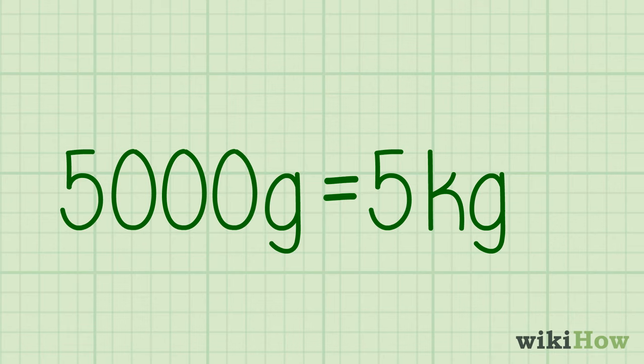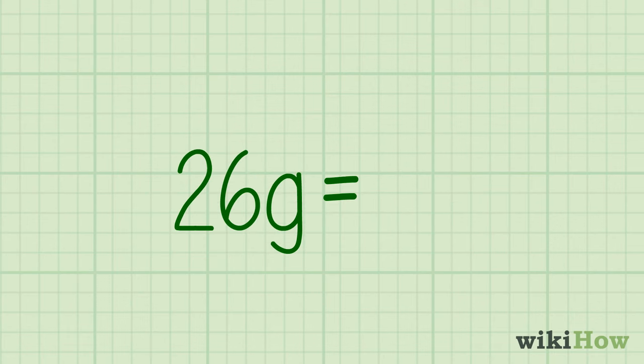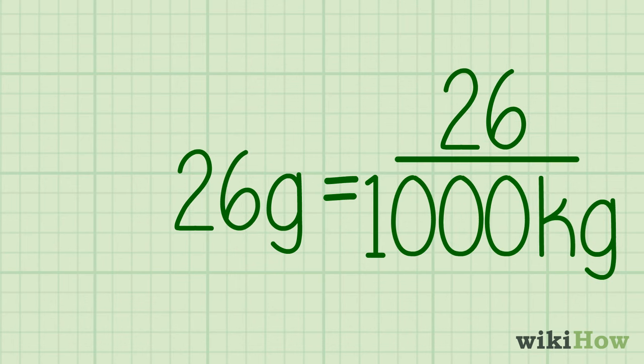But what if you're working with a small number of grams, like 26? In this case, you'll end up with a fraction of a kilogram when you make your conversion. While you could just write 26 over 1,000 kilogram, your answer will look less awkward if you write it as a decimal.